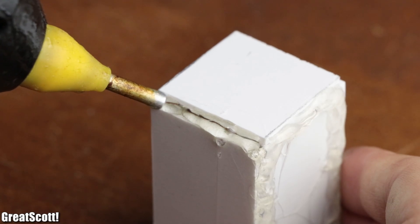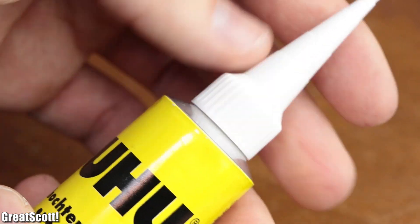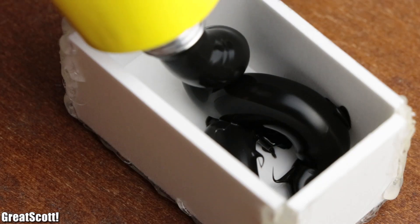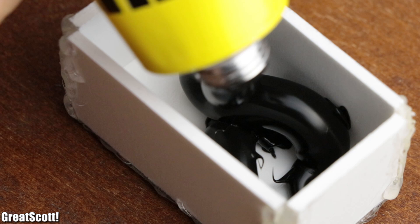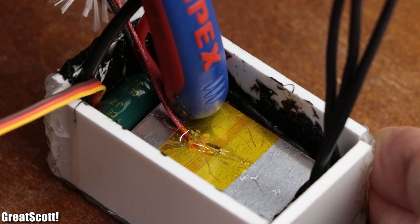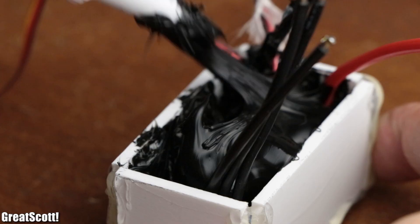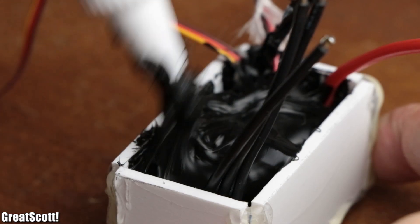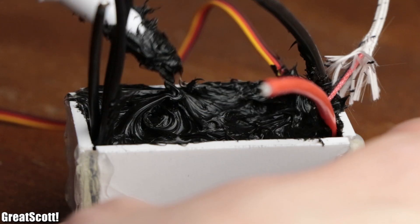Once that was done I prepared a tube of high temperature silicone and covered the bottom of the first cuboid with it. Afterwards I pressed the ESC into it and then buried it underneath another layer of silicone.